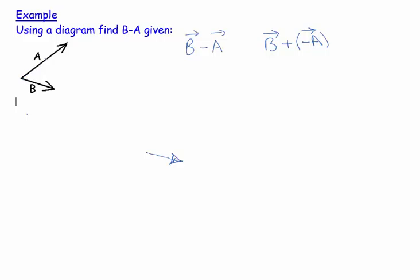Now if I wanted to add A, I'd simply put the tail of vector A on top of the head of vector B and draw an arrow upwards. If I want to add minus A, minus A is a vector similar to A, same line but in the opposite direction.